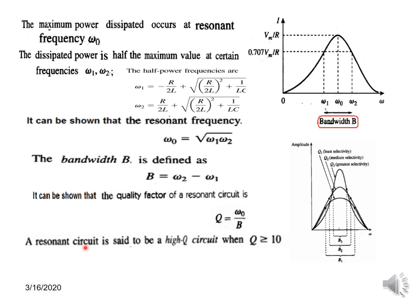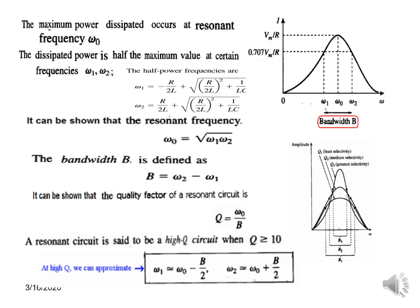A resonant circuit is said to be high-Q when Q > 10. At high Q, we can approximate: ω₁ ≈ ω₀ − B/2 and ω₂ ≈ ω₀ + B/2. This simplification will be useful in solving problems.